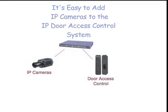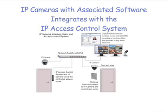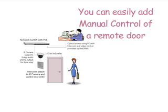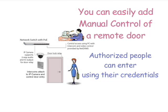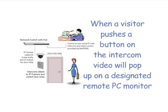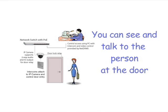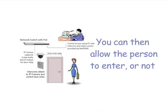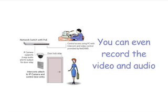You can use a number of different cameras to cover everything. A PTZ camera can view the parking areas while a fixed megapixel camera can view just the exit. It's easy to add IP cameras to the IP door access control system, and now you can create a completely integrated door access system. You can easily add manual control for a remote door. Authorized people can enter using their credentials, but when a visitor appears, they can push a button on the intercom and the video will pop up on the remote PC monitor. You can then see and talk to the person at the door, allow them to enter or not, and of course record the video and audio.